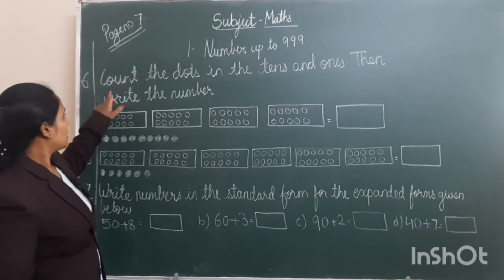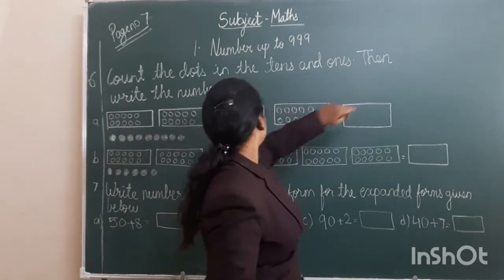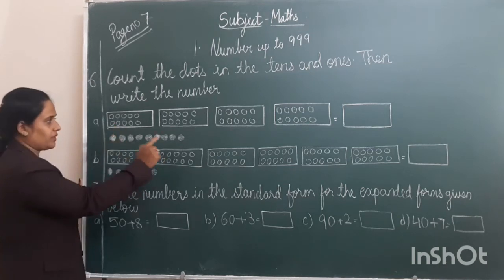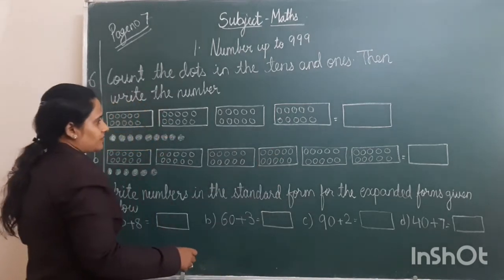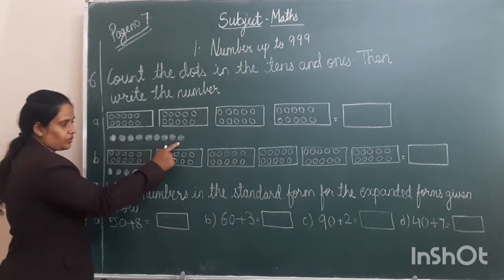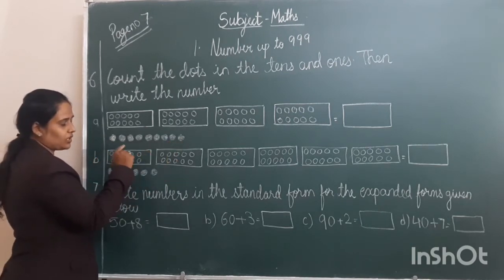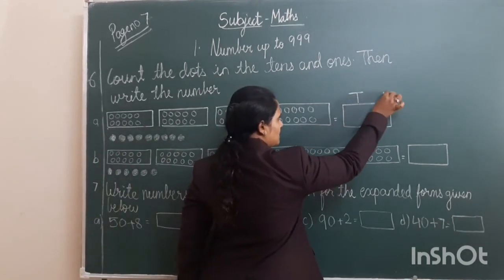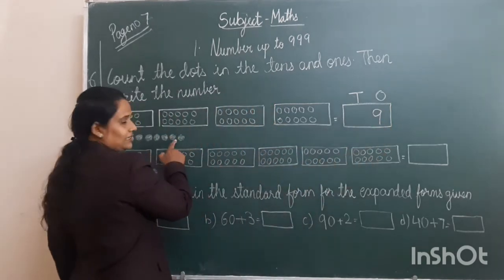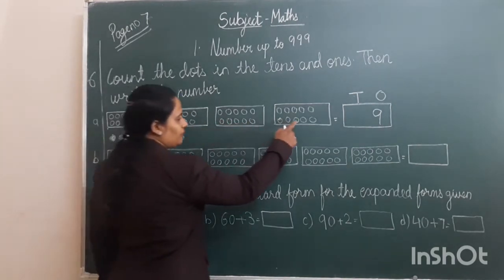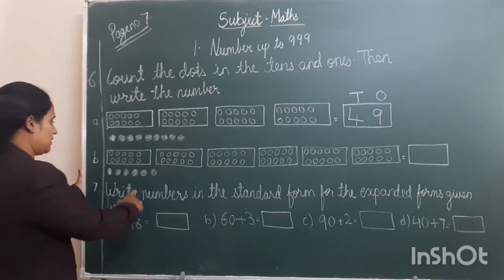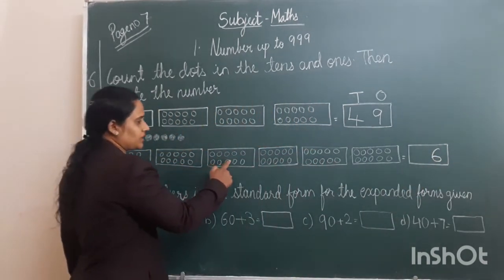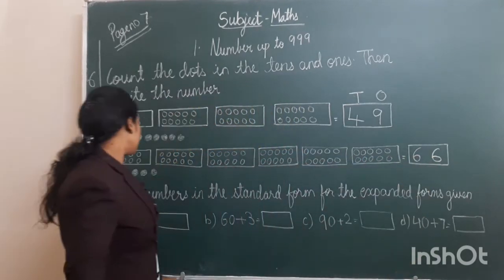Now the 6th question: count the dots in the 10s and 1s, then write the number. Each box is considered as 10s — 1 ten, 2 tens, 3 tens, 4 tens. The dots given are the place value of 1s. Counting the 1s: 1, 2, 3, 4, 5, 6, 7, 8, 9 — so at the 1s place 9 will come. Counting the 10s: 1, 2, 3, 4, 5, 6 — so at the 10s place 6 will come. The third sum you have to do yourself.